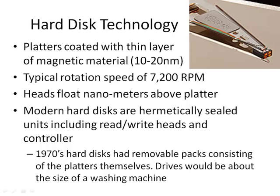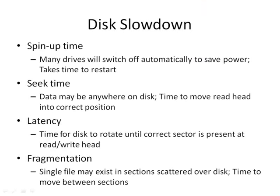Earlier hard disks were quite different. Going back to the 1970s, hard disks had removable disk packs and the drives were giant devices about the size of a washing machine. You could put one pack of disks in, while the head would be in the drive as a separate device.